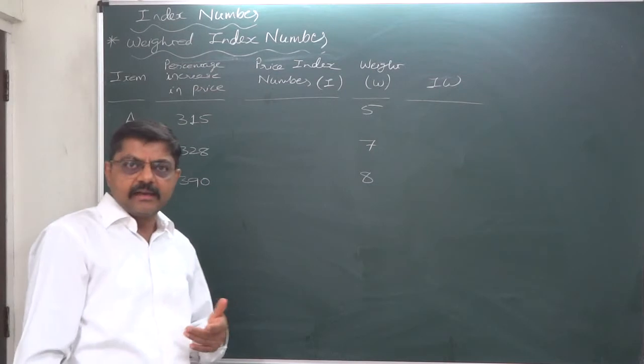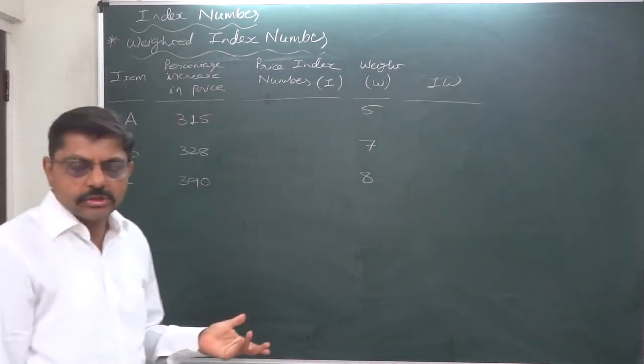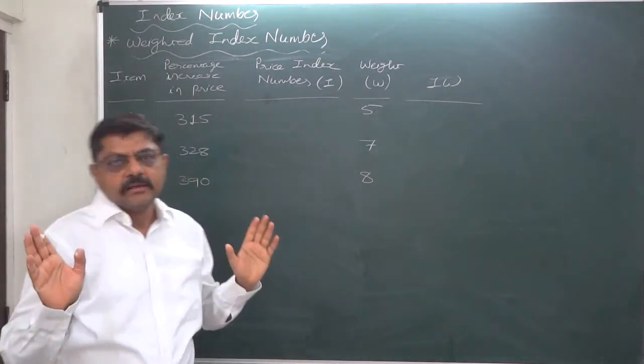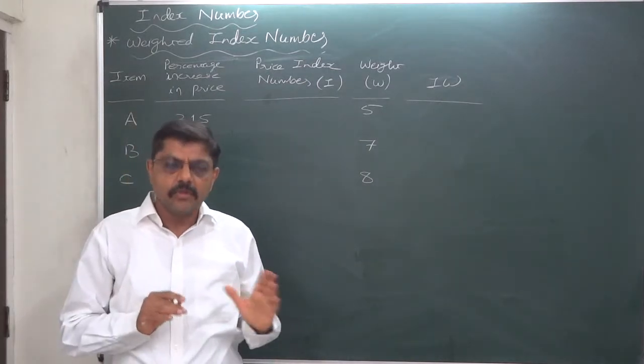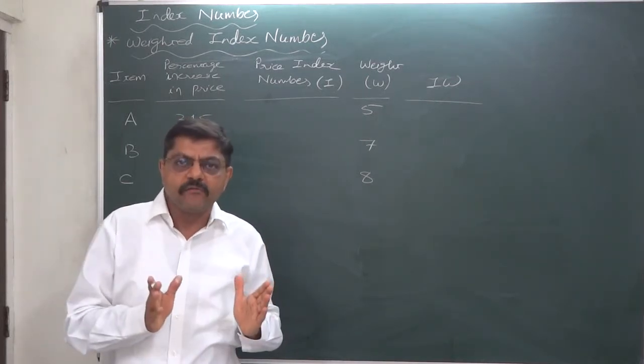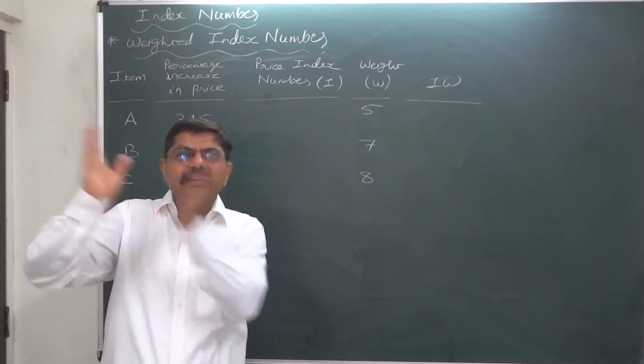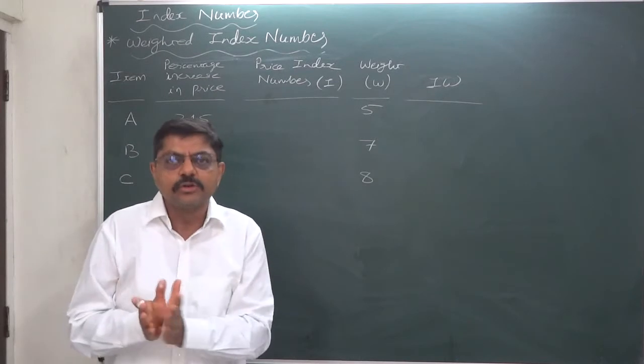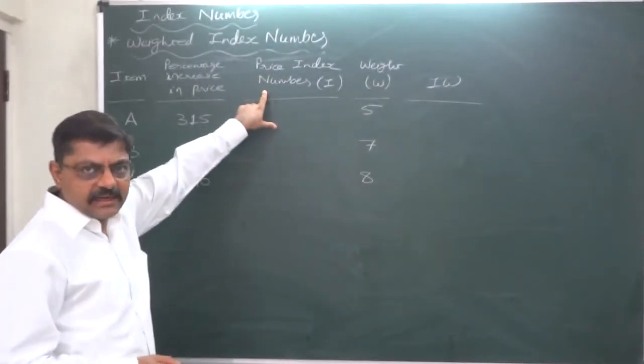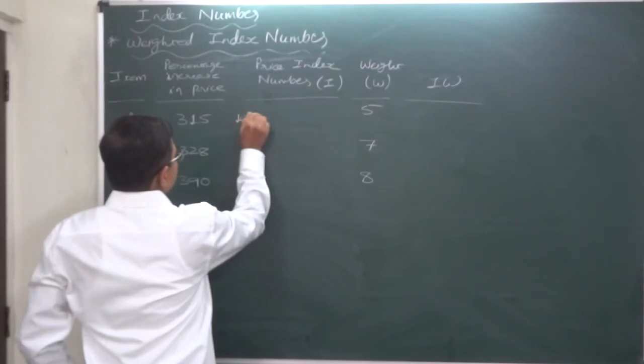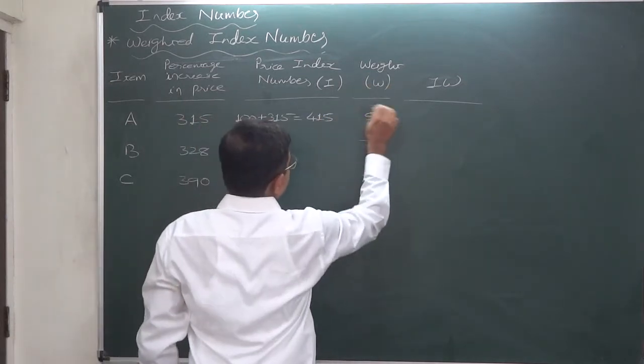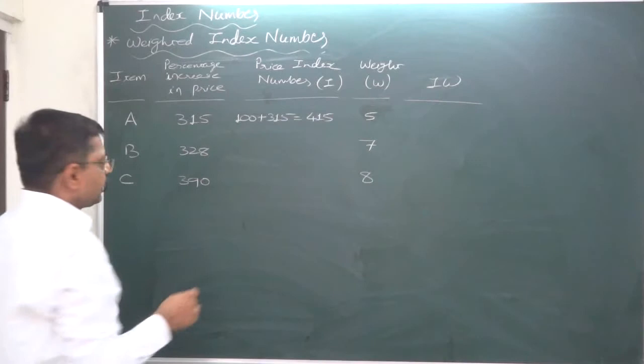At least in the final examination we can expect that you know how to calculate a simple weighted index number. So these are the percentage of price increase, and we now know very well that while constructing the index number or rather price index number, we know that the prices of the items in the base year are believed or considered to be 100. So these are the increase. So the price index numbers or percentage price relatives can be obtained by adding 100 to all these. This is a very small thing but very important, otherwise you cannot consider the correct index number.